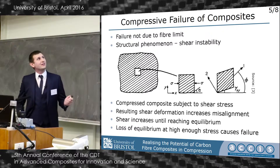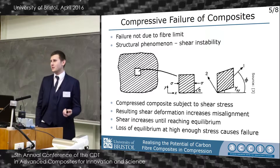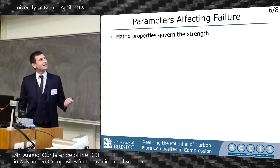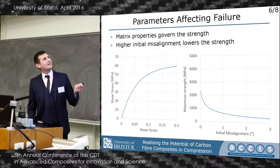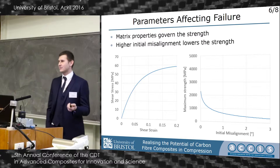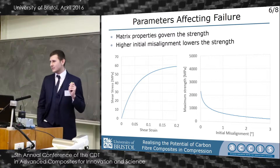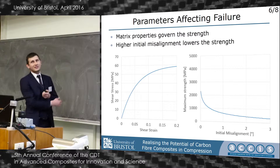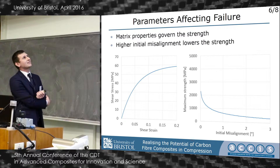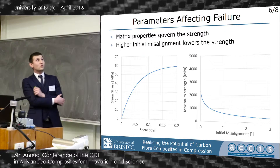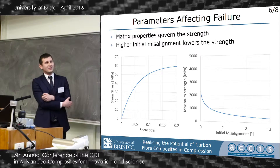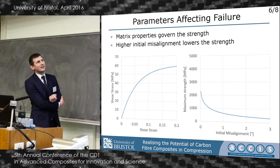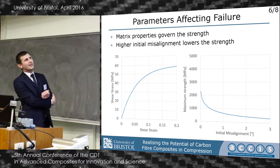We can model this behavior to check what we can do about it. When we model it, we know that matrix properties will govern the strength, and also that initial angle alpha will have an impact as well. When we model it, we get a curve like this. This is our input resin — shear strain, shear stress, pretty typical for an epoxy: 60 megapascals maximum stress and 1 gigapascal modulus. Higher angle means lower strength; lower angle means higher strength.